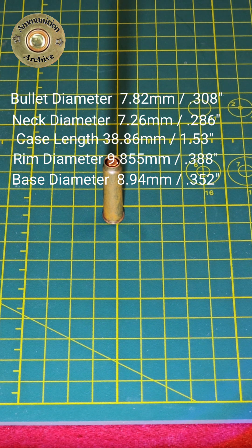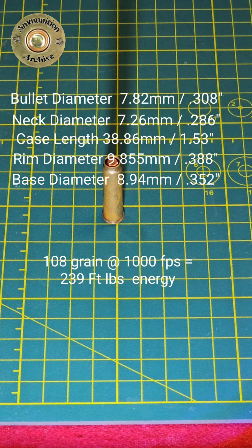With a 108 grain projectile, it has a velocity of 1,000 feet per second, producing 239 foot-pounds of energy.